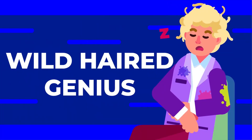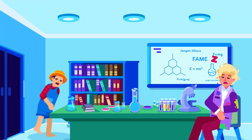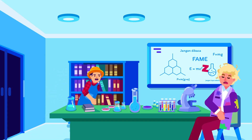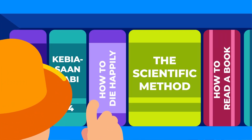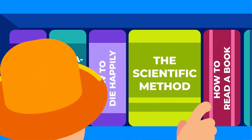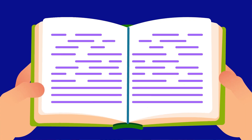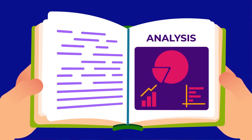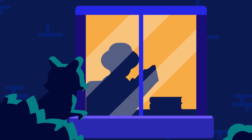You don't need to be a wild-haired genius throwing random substances together to do that. In fact, scientists follow a systematic approach called the scientific method, which involves careful observation, analysis, and experiment. Now, let's use the method to catch the vandal.